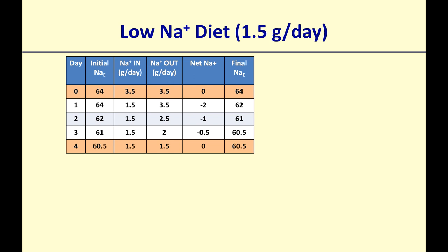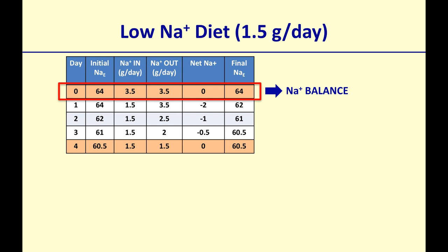Now let's look at the opposite scenario: a low sodium diet. Depending on the guidelines — JNC7 defines low sodium as 2.4 grams or less, while the American Heart Association recommends 1.5 grams — we'll assume low sodium is 1.5 grams per day. At day zero, before the diet starts, this person is at 64 grams total body sodium, eating 3.5 grams per day, with kidneys excreting 3.5 grams — in sodium balance.